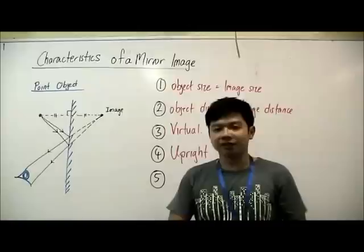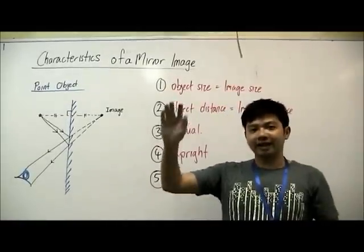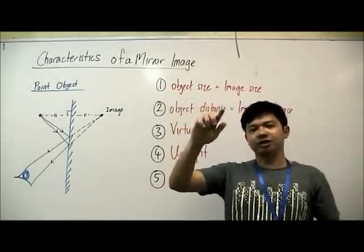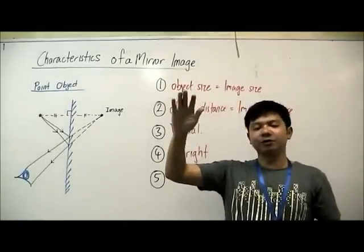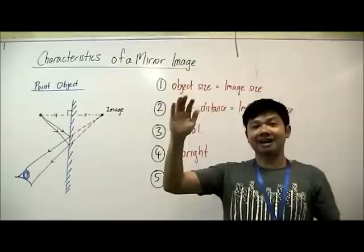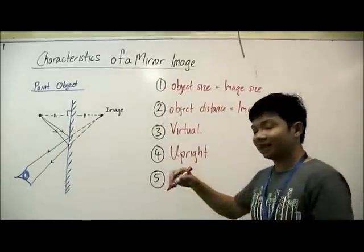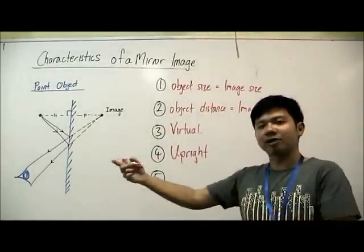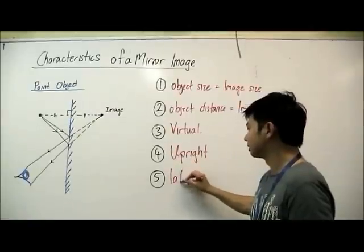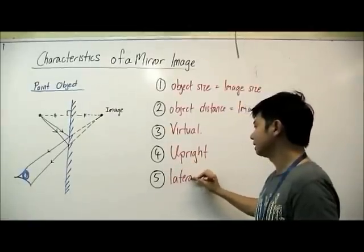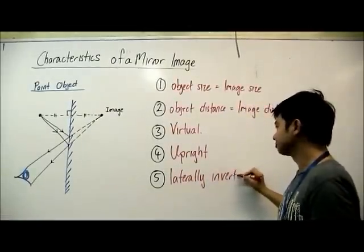And if we raise our right hand, the image that we see in the mirror will actually raise the left hand. So with this we see that the left becomes right and the right becomes left — we see that it's laterally inverted.